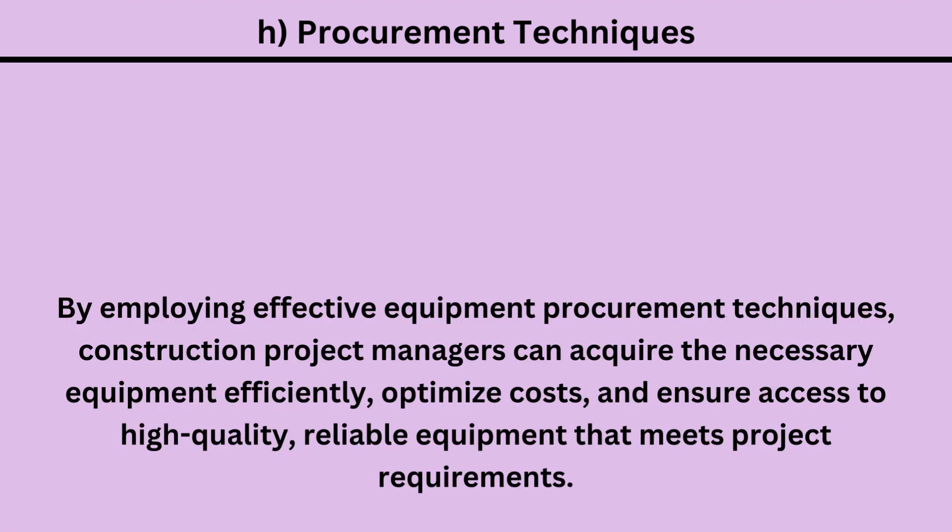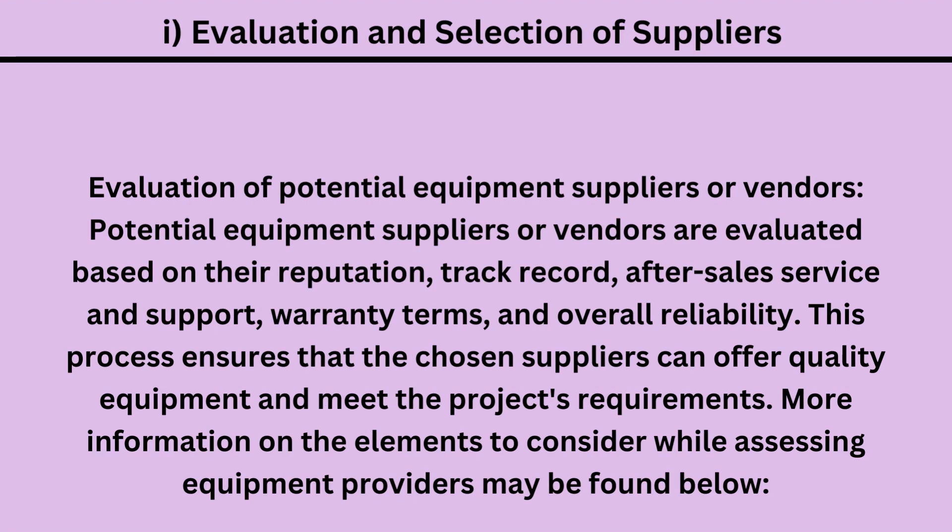By employing effective equipment procurement techniques, construction project managers can acquire the necessary equipment efficiently, optimize costs, and ensure access to high-quality, reliable equipment that meets project requirements. I. Evaluation and selection of suppliers. Potential equipment suppliers or vendors are evaluated based on their reputation, track record, after-sales service and support, warranty terms, and overall reliability. This process ensures that the chosen suppliers can offer quality equipment and meet the project's requirements.